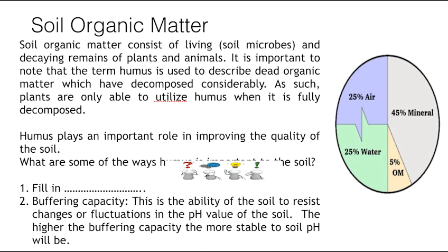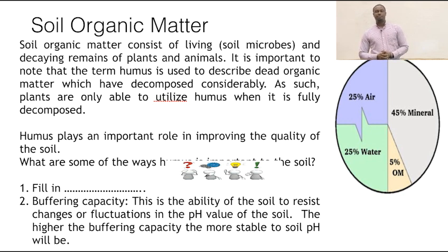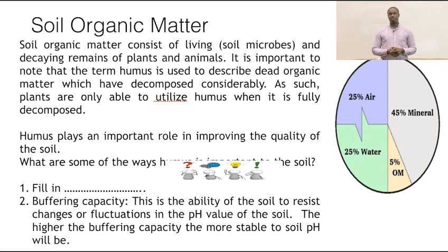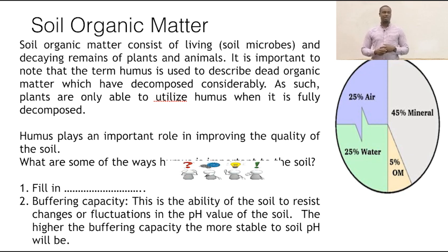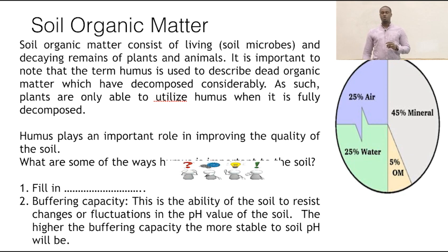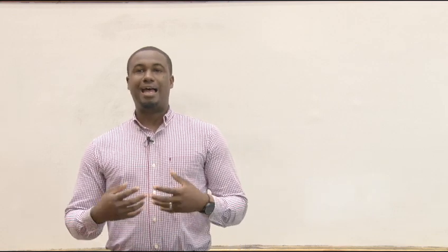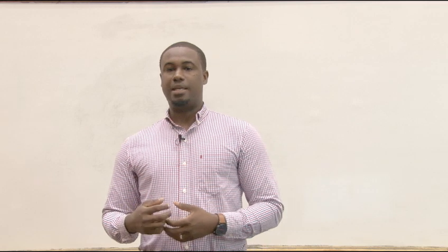Let's jump into organic matter. When you hear the word organic matter, something natural should come to mind. Soil organic matter consists of living things such as your soil microbes and decaying remains of plants and animals. It is important to note that the term humus is used to describe dead organic matter which has decomposed considerably. So organic matter includes both living and dead — your living microbes in the soil doing their work, and also your plant materials and animal remains that have died.